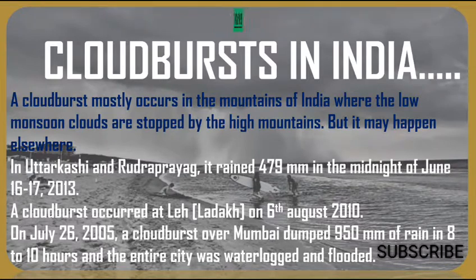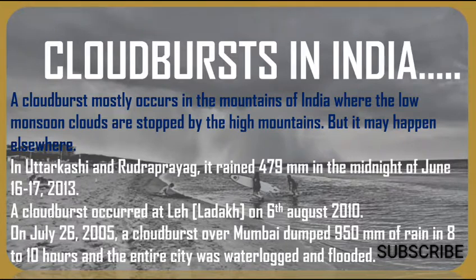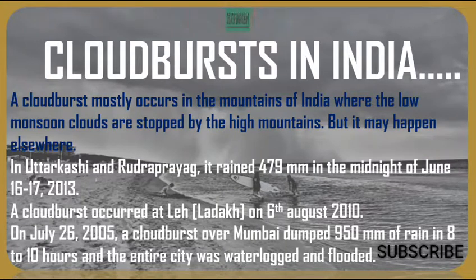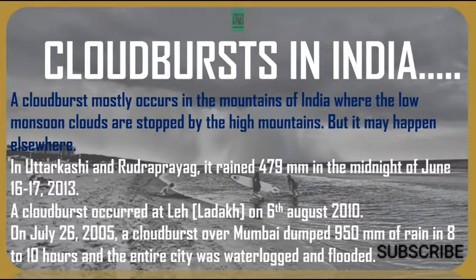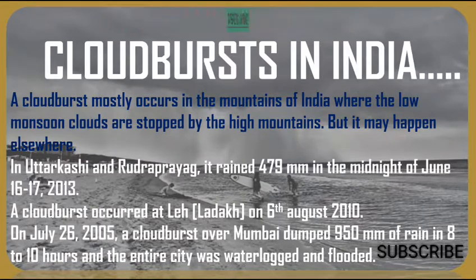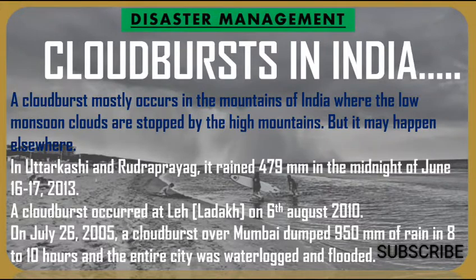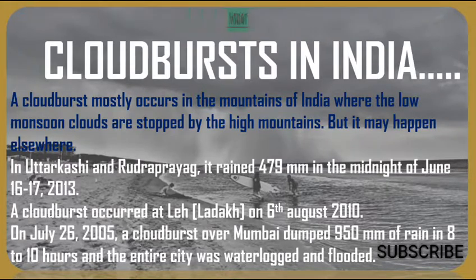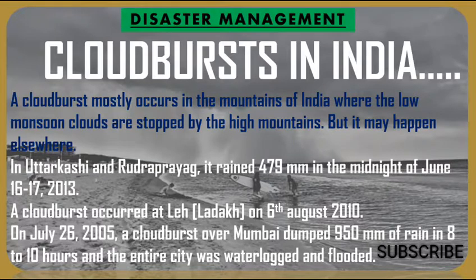Cloudbursts mostly occur in the mountains of India, where low monsoon clouds are stopped by high mountains, but they may happen elsewhere too. In Uttarkashi and Rudraprayag, it rained 479 mm in the midnight of June 16–17, 2013. A cloudburst occurred at Leh, near Ladakh, on 6 August 2010. On July 26, 2005, a cloudburst over Mumbai city dumped 950 mm of rain in 8 to 10 hours, and the entire city was waterlogged and flooded.